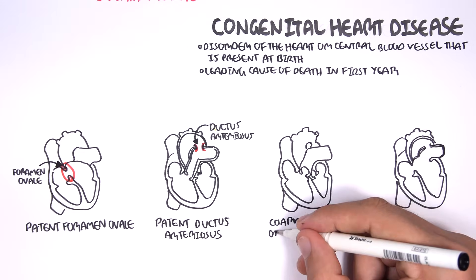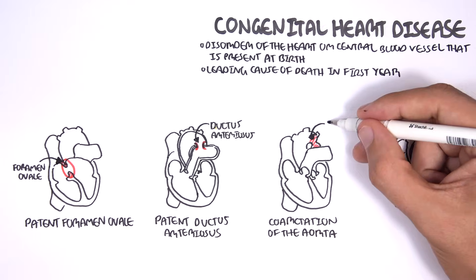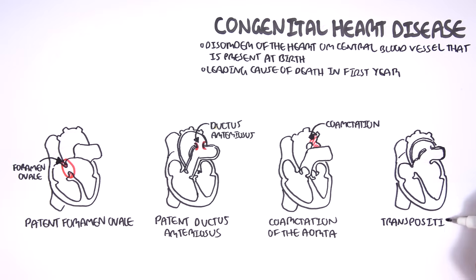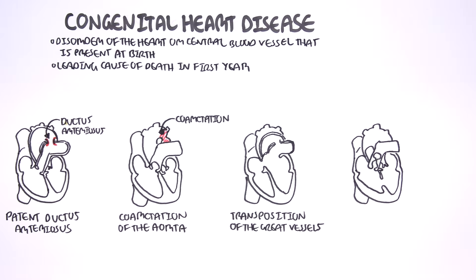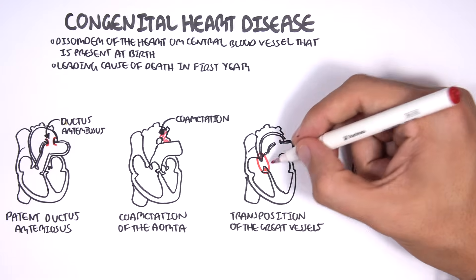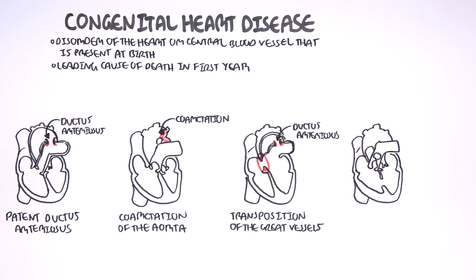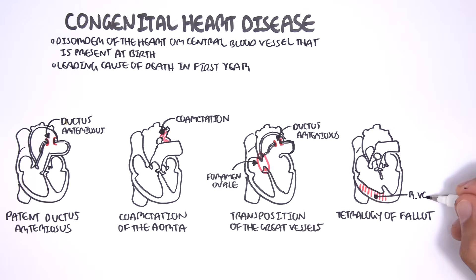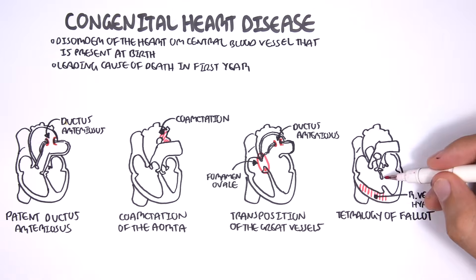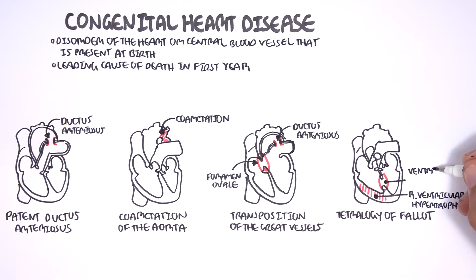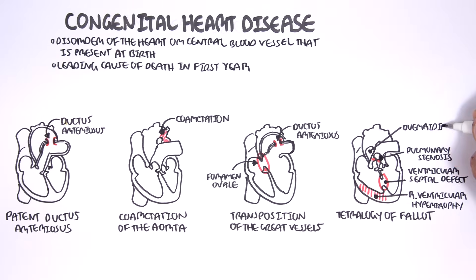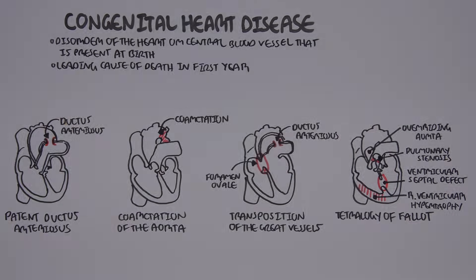Coarctation of the aorta is another congenital heart disease. Transposition of the great vessels is where both the foramen ovale and patent ductus do not close. The final congenital heart disease is tetralogy of Fallot, which is composed of four components: right ventricular hypertrophy, ventricular septal defect, pulmonary stenosis, and the overriding aorta.